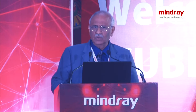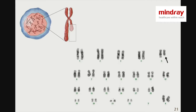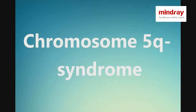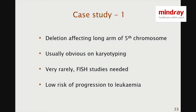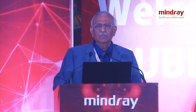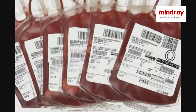Karyotyping shows deletion of the long arm of the fifth chromosome — the 5Q- syndrome. This is invariably obvious in the karyotyping itself; very rarely do you need FISH to prove this point. This disease is a low-risk MDS; very rarely does it go on to develop leukemia.